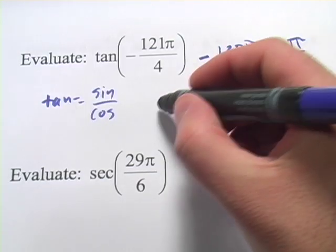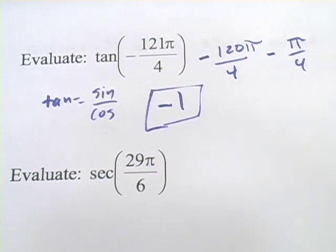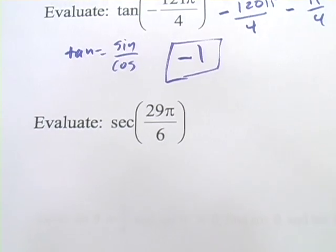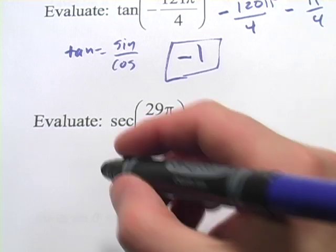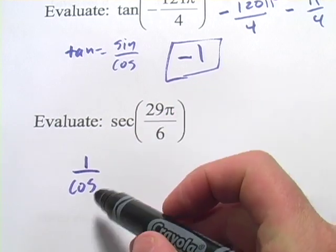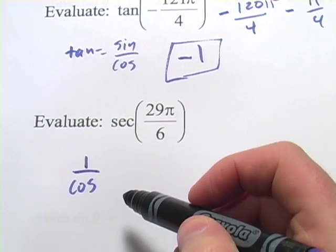A lot of work there for a pretty simple answer. All right, let's do one more. This one says to evaluate the secant of 29 pi over 6. And the secant is 1 over the cosine. So we're going to find the cosine and then take the reciprocal of it.